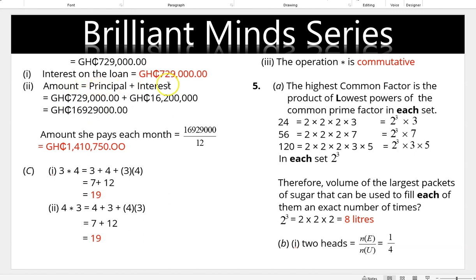Amount = Principal + Interest. Adding the values gives the total amount. The monthly payment is the total amount divided by 12, which equals 1,410,750 Ghana cedis. For the binary operation: 3 ★ 4 = 3 + 4 + 3 × 4 = 19, and 4 ★ 3 = 4 + 3 + 4 × 3 = 19. Since both give the same result, the operation is commutative.